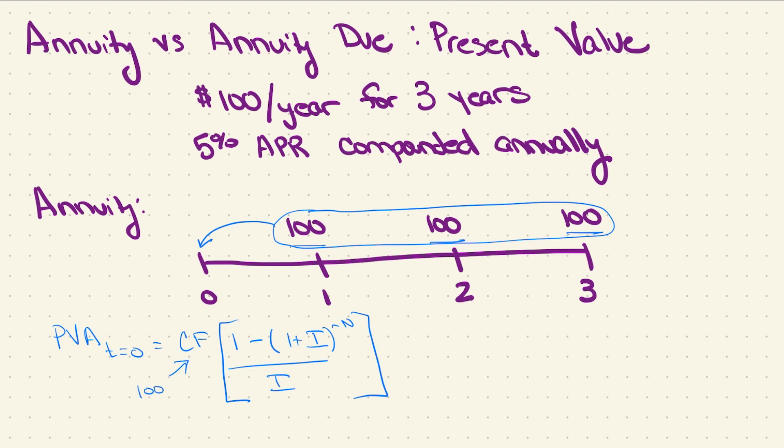For each of our inputs here, our cash flow would be $100. Our i, these cash flows are all annual and our rate is annual so we don't have to worry about compounding or intra-year compounding. So my i is going to be 0.05 or 5%, and then my n is going to be my number of cash flows, so in this case 3. If I plug everything in, I'm going to end up with 100 times 1 minus 1 plus 0.05 to the negative third power divided by 0.05, which gives me an answer of $272.32.